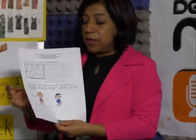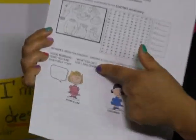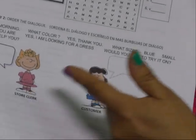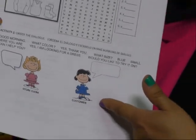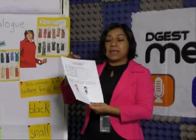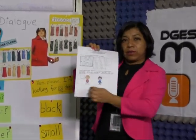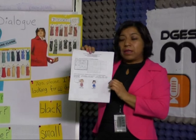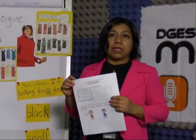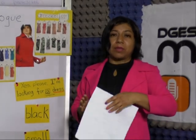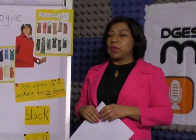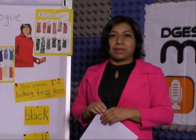En la segunda parte te anotamos un diálogo. ¿Qué diálogo? Es este diálogo, nada más que aquí está en desorden y tú lo vas a tener que ordenar: ¿quién es el Store Clerk y quién es el Customer? Siguiendo el mismo ejemplo que aquí trabajamos y que tú también viste en clase, lo vas a poder ordenar correctamente. De esta manera vamos a poder repasar el tema. Para que posteriormente, cuando ya estemos laborando, le demos continuidad a esta unidad y podamos cerrar. Gracias.